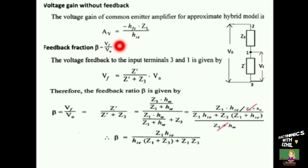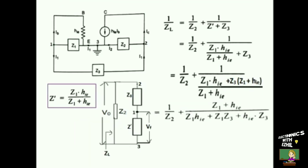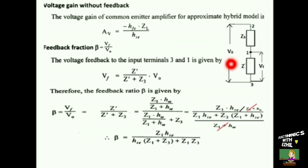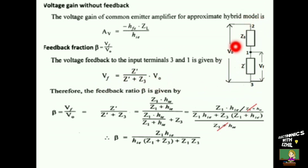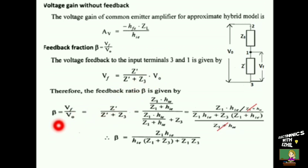Next, we find the feedback factor beta, defined as the output voltage of the feedback network Vf divided by the input voltage V-naught. The output voltage appears across terminals 2 and 3, and the feedback is applied between terminals 1 and 3. Using the potential divider network, Vf is given by the total voltage V-naught multiplied by Z-dash, divided by Z-dash plus Z3. Therefore, beta = Vf/V-naught = Z-dash / (Z-dash + Z3).